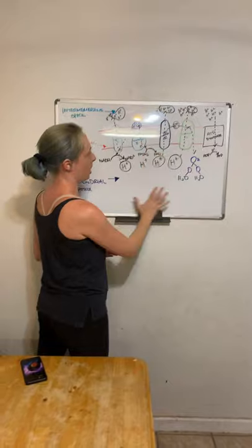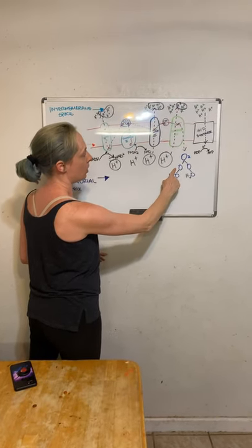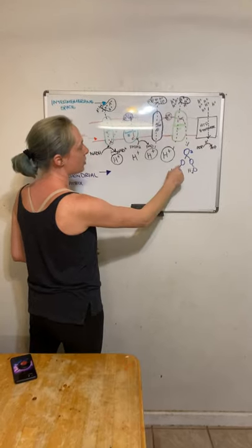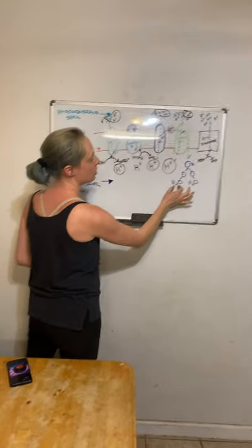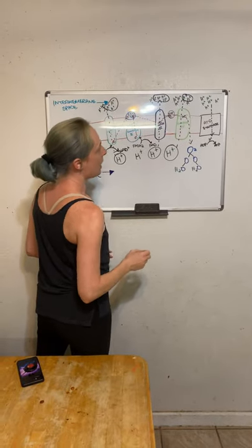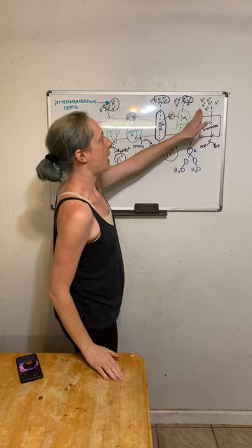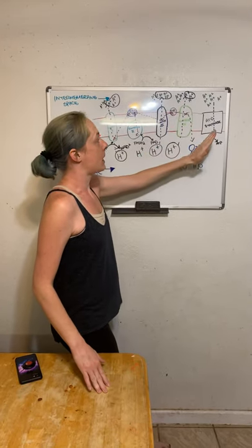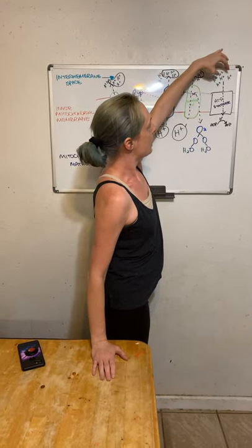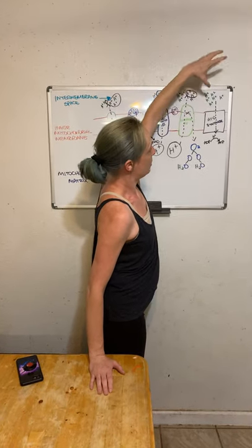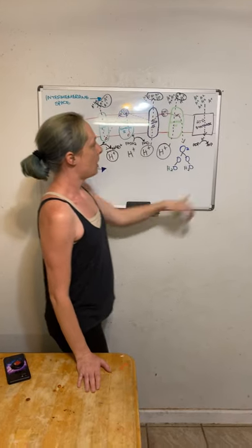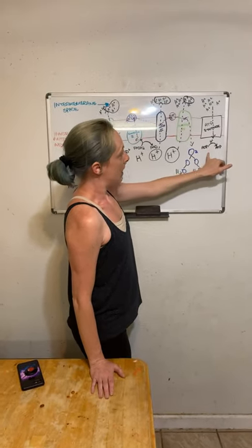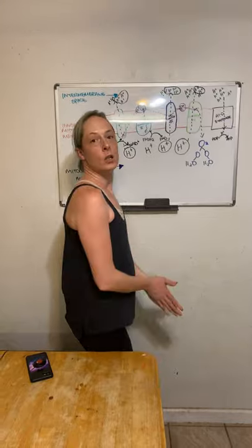Oxygen in the mitochondrial matrix then splits and becomes two oxygen ions. Four hydrogens are donated to these oxygens, making two water molecules. ATP synthase is activated by the electrochemical gradient that is created by the influx of protons in the intermembrane space. It then transports 34 hydrogens in total back into the mitochondrial matrix, at which point ADP plus inorganic phosphate is given enough energy to phosphorylate and become ATP. And that's it!